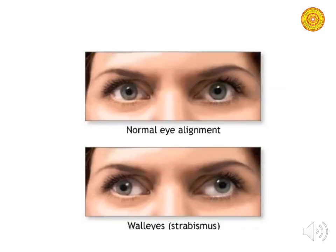The corneal light reflex test: when a bright light is shone in front of both eyes, if the white reflections fall on corresponding areas of both corneas, eye alignment is normal. If the reflections are not in corresponding areas of the cornea, this indicates strabismus and a problem with the visual axis.